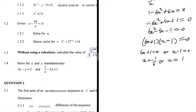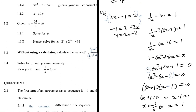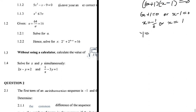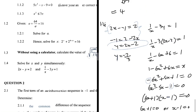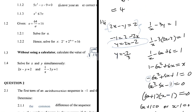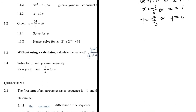Finding corresponding y values using y = 2x - 2: when x = -1/6, y = 2(-1/6) - 2 = -7/3. When x = 1, y = 2(1) - 2 = 0. So the solution pairs are (x, y) = (-1/6, -7/3) or (1, 0).